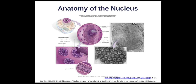Looking at the nucleus diagram: the nucleolus is the small dot inside making ribosomes. The rest of the nucleus contains chromatin that condenses into chromosomes. All of this is surrounded by the nuclear envelope with its pores that allow things in and out.